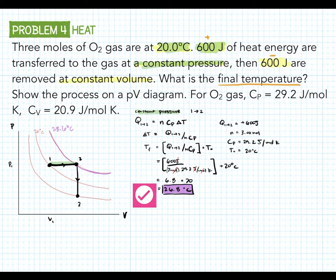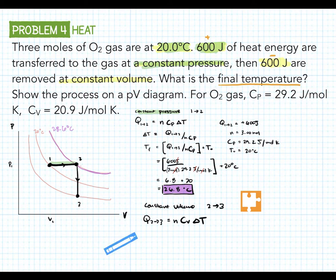Next one is constant volume, which we could also call isochoric. That would be from 2 to 3. And we know that Q from 2 to 3 is a constant volume, so that's nCv delta T. Once again, we want to find delta T.